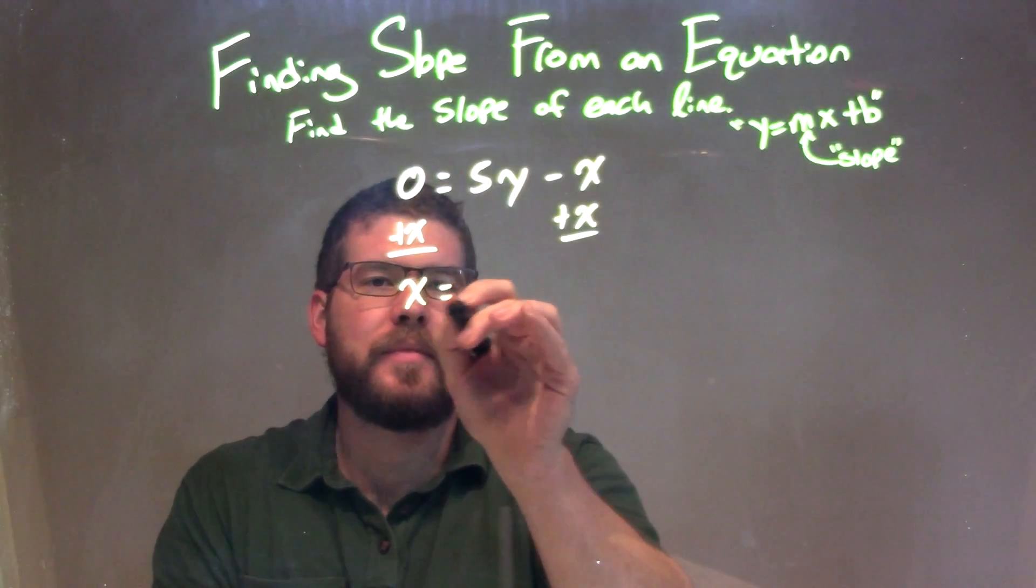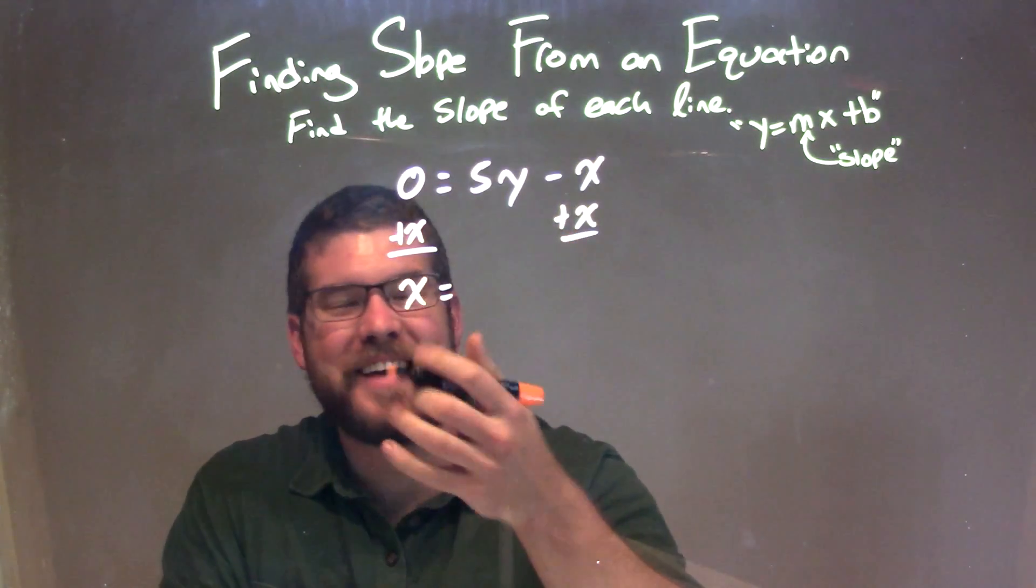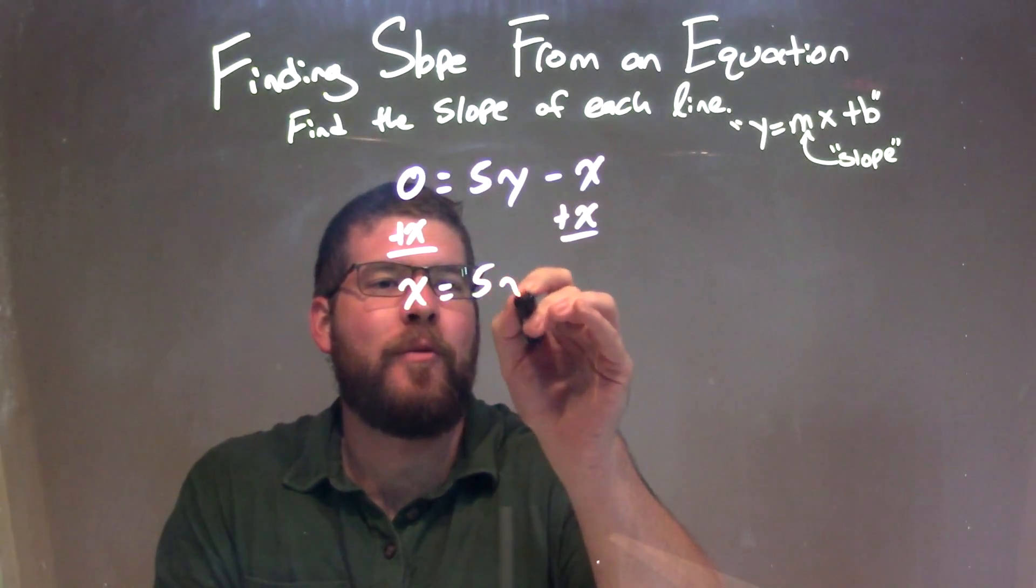0 plus x, which is... sorry, not 0, just x. So x equals, and we're left with 5y here.